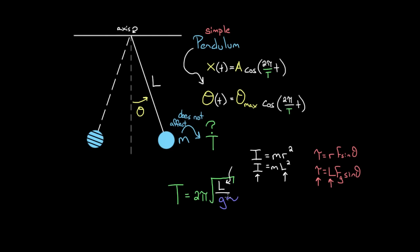Why does increasing g — the gravitational acceleration — decrease the period? Bigger g means a bigger force of gravity pulling downward, giving a larger restoring force. A larger force means larger acceleration, larger speed, so the mass moves back and forth faster and takes less time to complete a cycle. If you know about torque: increased force increases torque, which increases angular acceleration, so it takes less time — the period goes down.